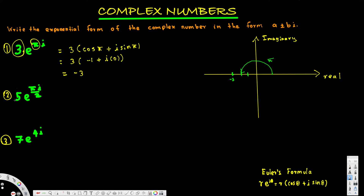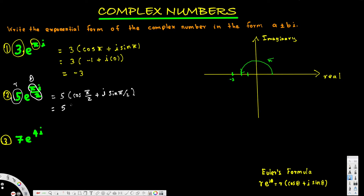Now let's look at the second one. We have 5 as our r and 5π/2 as our θ. Writing this in expanded form: 5·cos(5π/2) plus i·sin(5π/2). cos(5π/2) is equal to 0, and sin(5π/2) is equal to 1, so we just put 1 here.